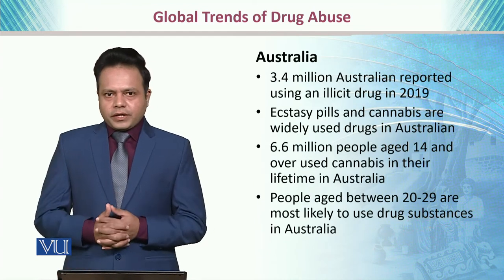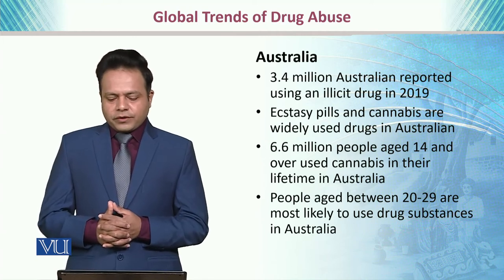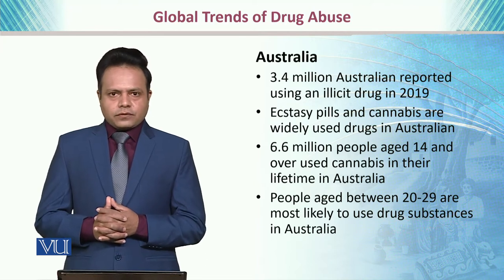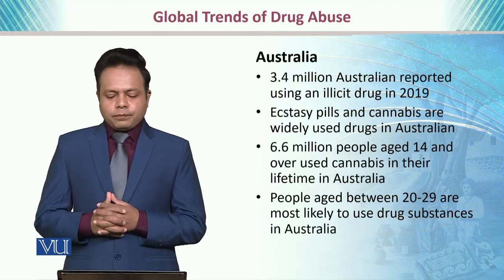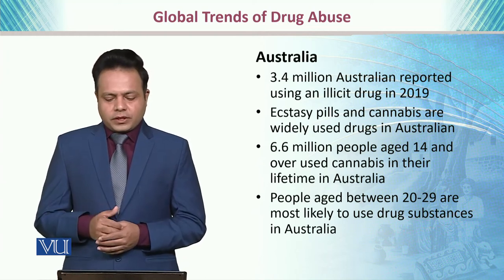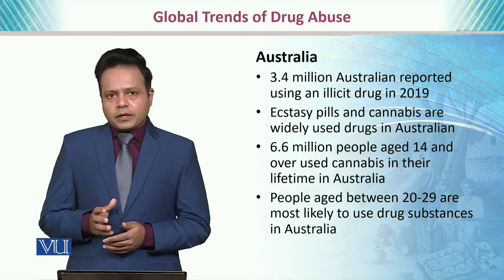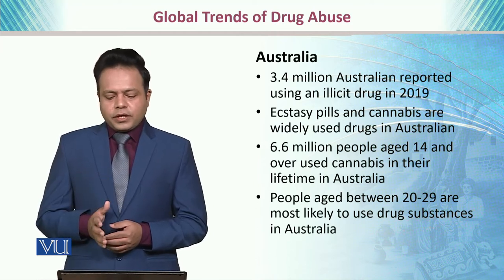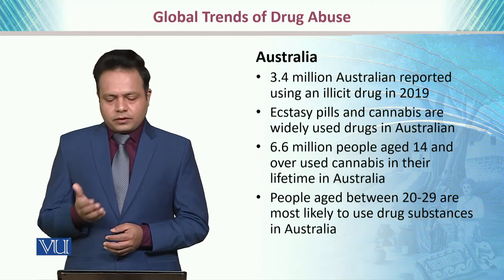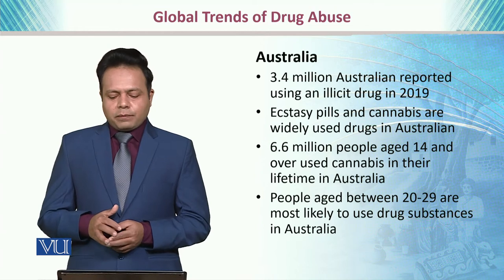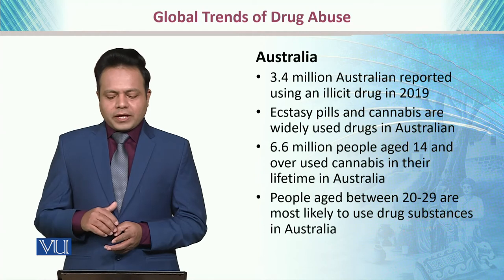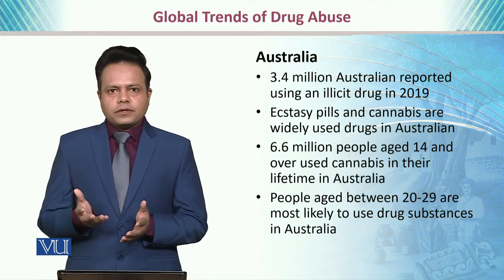In Australia, 3.4 million Australians were reported to be using illicit drugs during 2019. Ecstasy pills and cannabis are widely used drugs in Australia, and 6.6 million people aged 14 and over used cannabis in their lifetime. People aged between 20 to 29 are most likely to consume drug substances in Australia, making it also quite vulnerable to drug consumption.